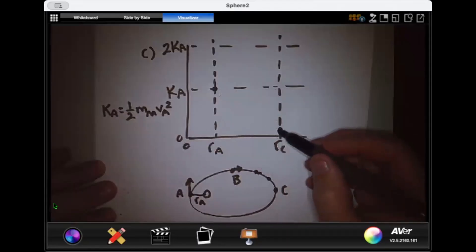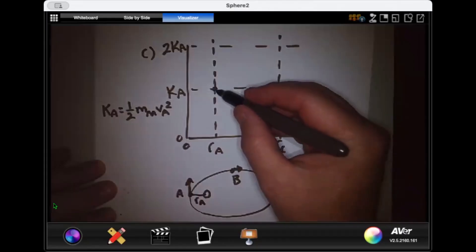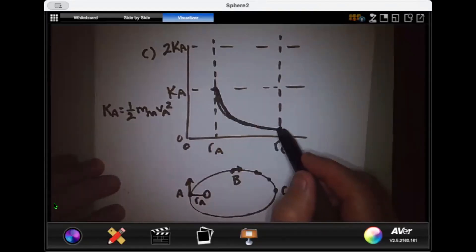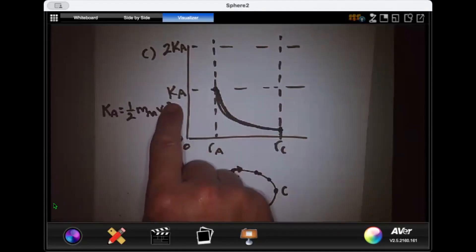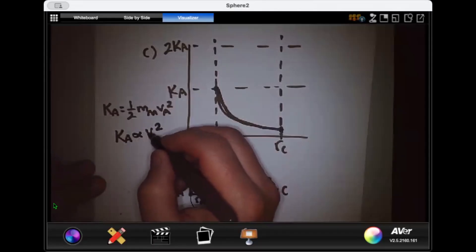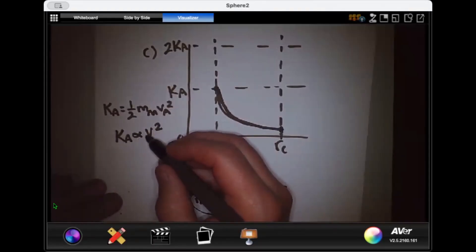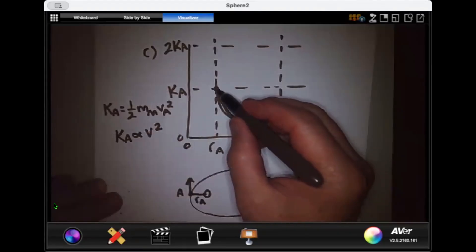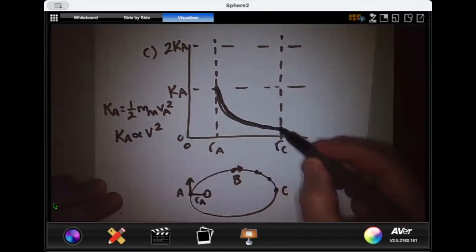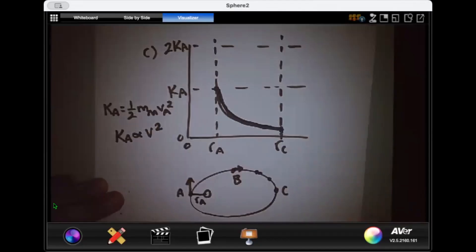Now, I shouldn't draw a straight line. I should draw a line that looks like this. There, that looks good, just like that. Now, why is it looking like this? Well, think about it. Yes, the velocity is reducing, but the velocity is being squared. So kinetic energy is proportional to V squared. So since my velocity is reducing and it's being squared, kinetic energy is actually decreasing exponentially, which would look like this curve right there. Okay, C is done. Moving on to D.